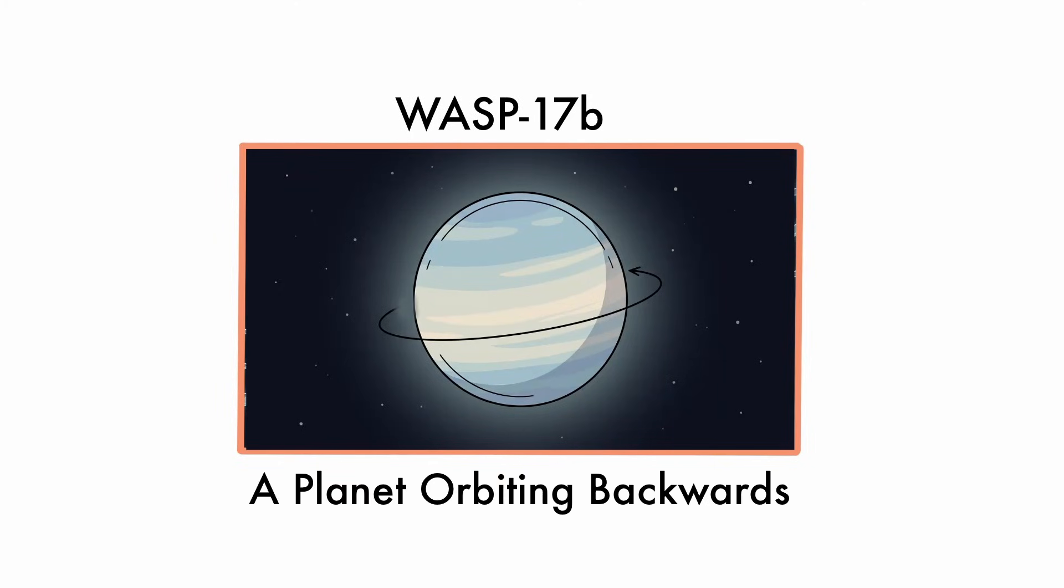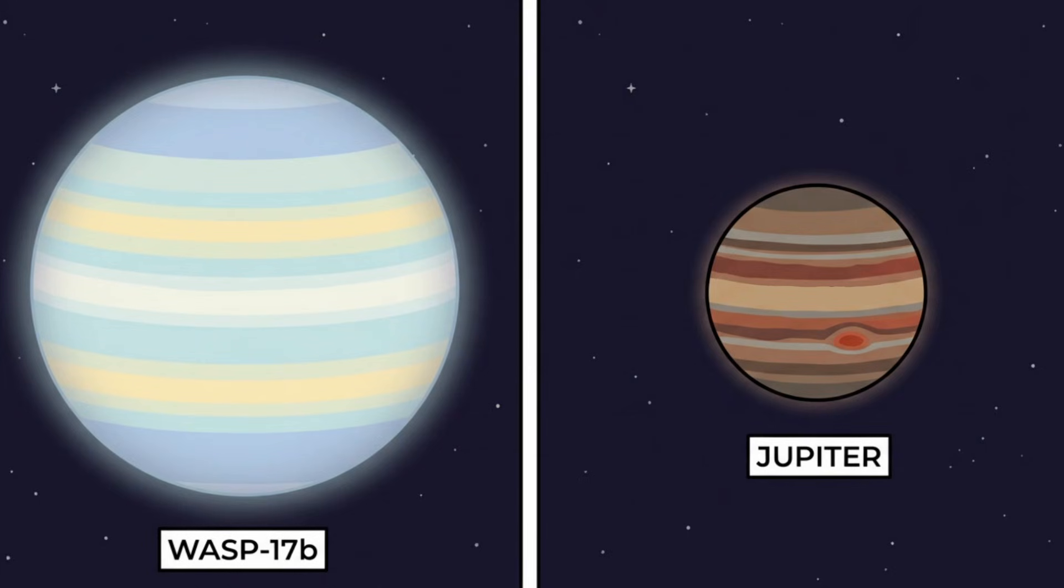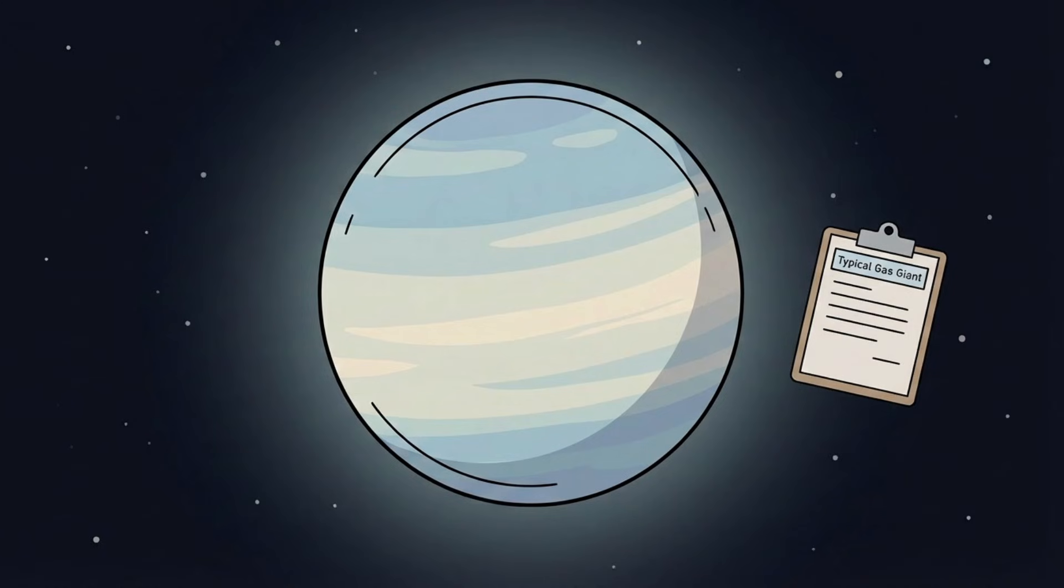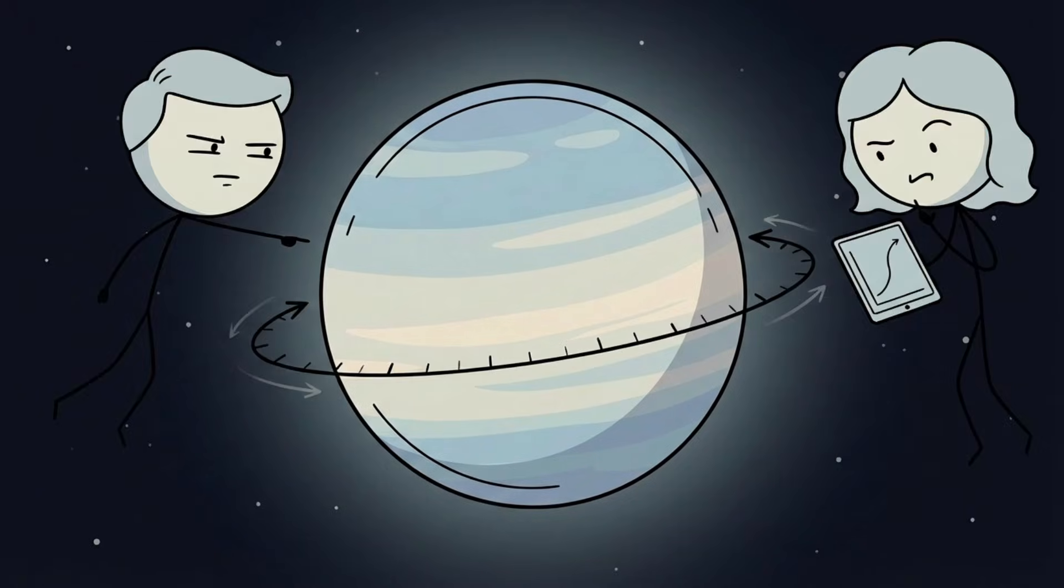WASP-17b, a planet orbiting backwards. WASP-17b is located about 1,000 light-years from Earth and is larger than Jupiter but far less dense. On paper, it looks like a typical gas giant. Its size is familiar. Its composition is expected. The strange part only appears when astronomers track how it moves.